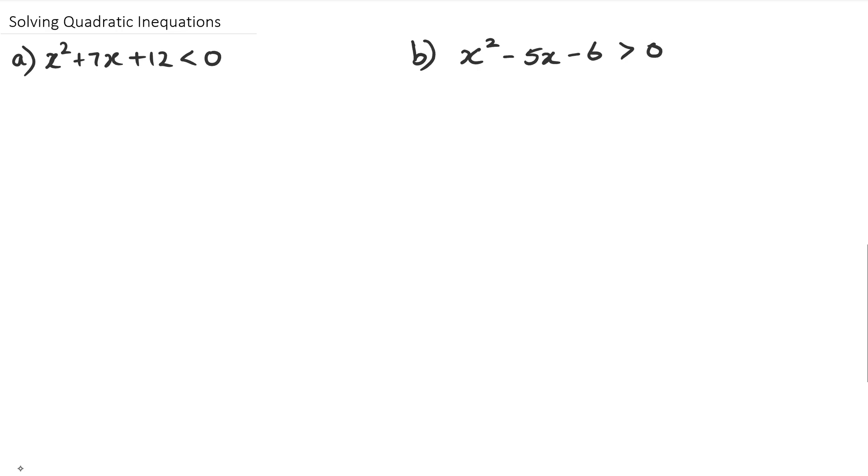With the first question, you have a quadratic and it's actually less than zero. Now all this time you've actually had a quadratic equation equal to zero. So the process behind finding it less than zero is pretty much exactly the same as what you did.